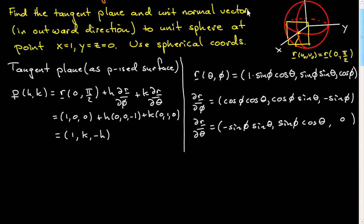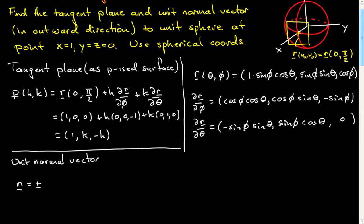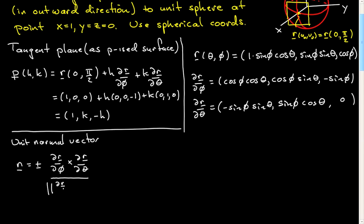Now we compute the unit normal vector n in the outward direction. It will be plus or minus the cross product of the derivatives of our parametrization, divided by the norm of that cross product to get a unit vector. All derivatives are evaluated at the point in question. We need this cross product — that's one of the things you very frequently need when working with surfaces. I've lined the derivatives up in columns to compute the cross product in place.